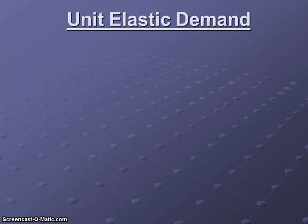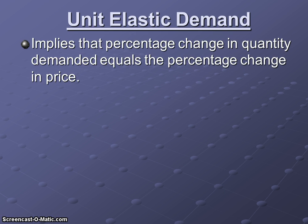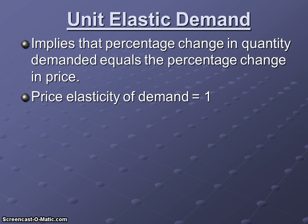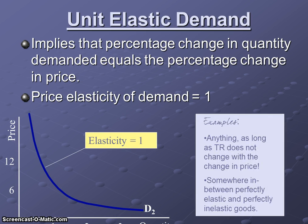Unit elastic demand implies that the percentage change in quantity demanded exactly equals the percentage change in price. When the numerator and denominator of your equation are the same value, dividing gives an answer of 1. So a coefficient of elasticity equal to 1 means demand is unit elastic — this applies to any good where total revenue doesn't change when price changes.